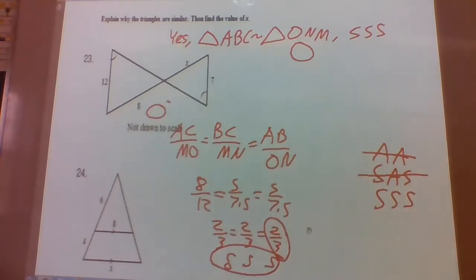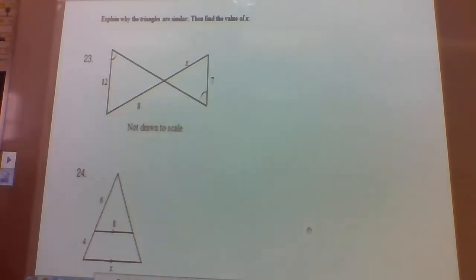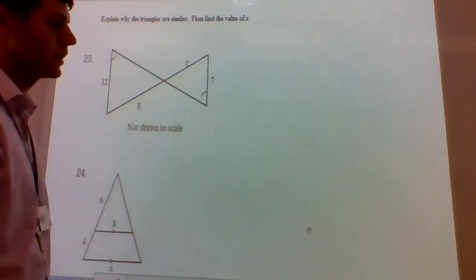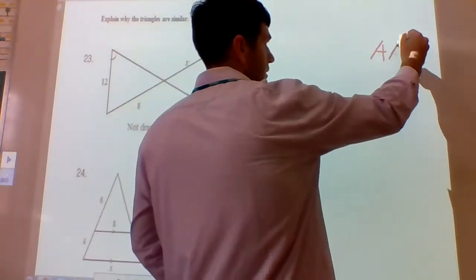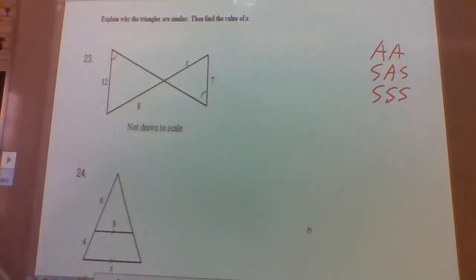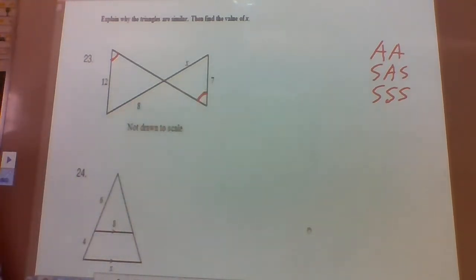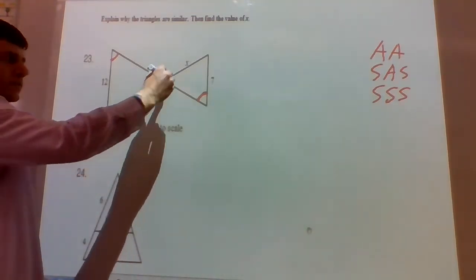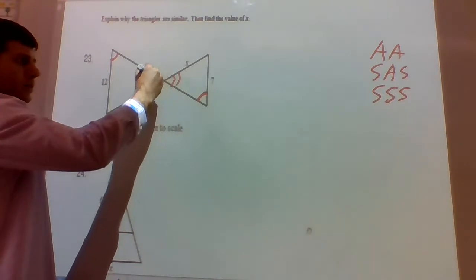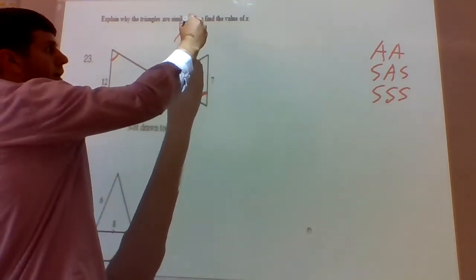Problem 23: explain why the triangles are similar and find the value of X. The three ways to show triangles are similar are angle-angle, side-angle-side, and side-side-side. Here we're given a pair of angles, and we also have vertical angles. Vertical angles are always congruent. So we have two pairs of congruent angles — angle-angle similarity.